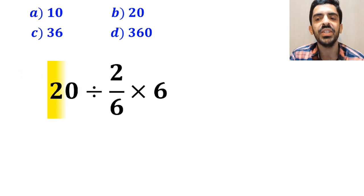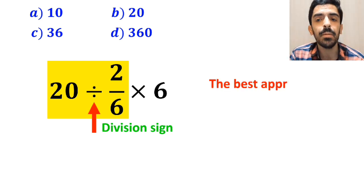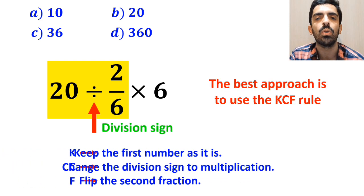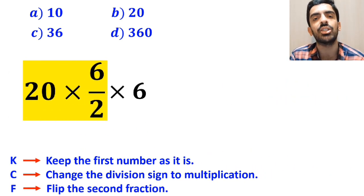So, we'll start with the expression 20 divided by 2 over 6. Whenever we see a division sign between two terms, the best approach is to use the KCF rule. So, we remove the highlighted part and replace it with 20 times 6 over 2.